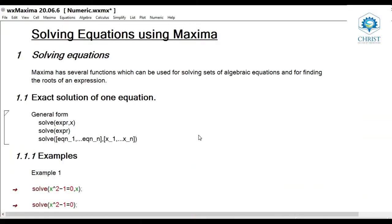Welcome to the section Solving Equations Using Maxima. In mathematics, to solve an equation means to find a solution — the values that fulfill the condition stated by the equation. When finding a solution, one or more variables may be unknowns. A solution is the value to the unknown variable that makes the equality true in the given equation. A solution is also called the root of the equation. An equation can be solved either numerically or symbolically. The methods for finding the equation roots generally depend on the type of the given equation.